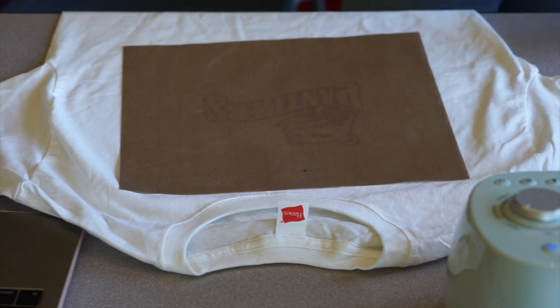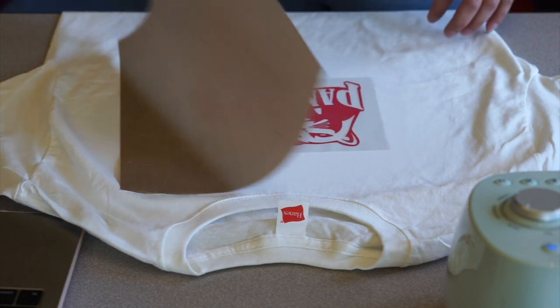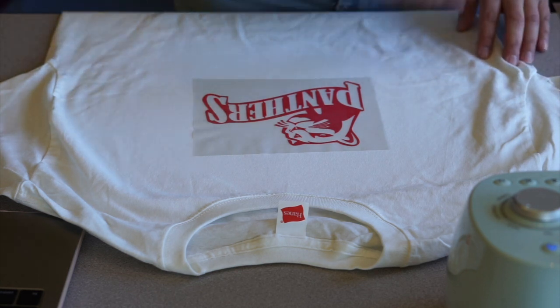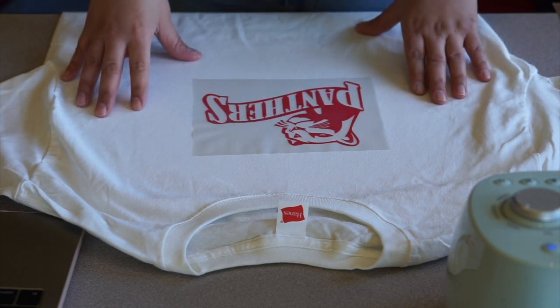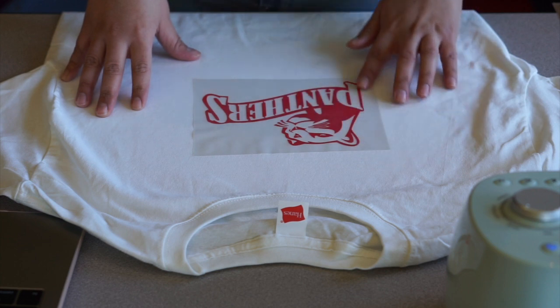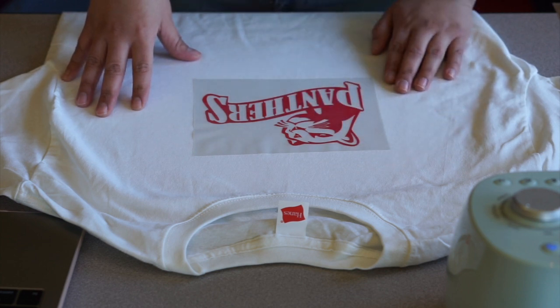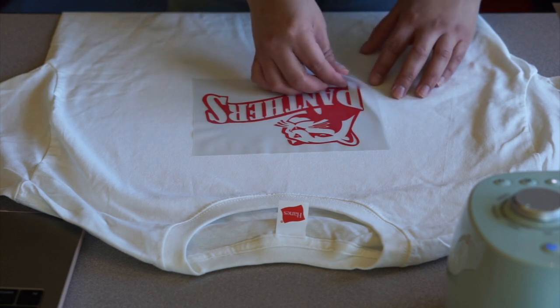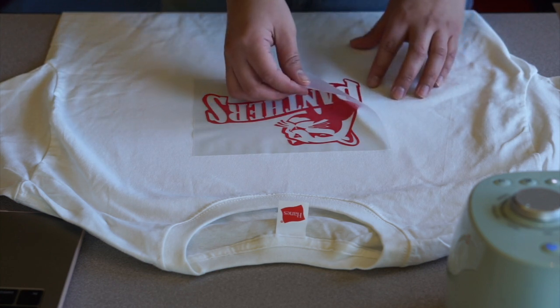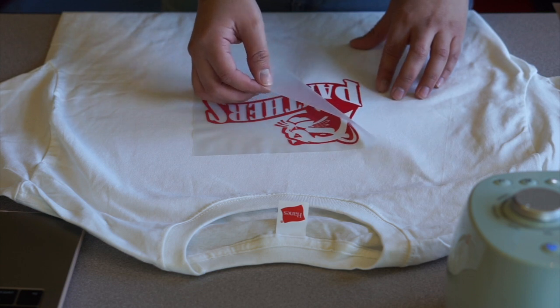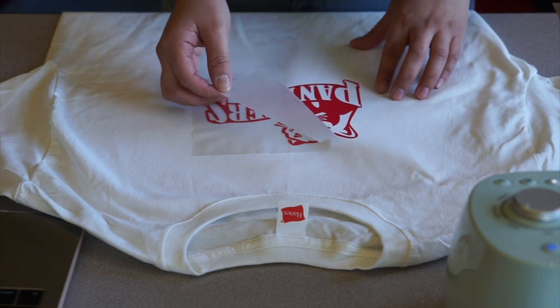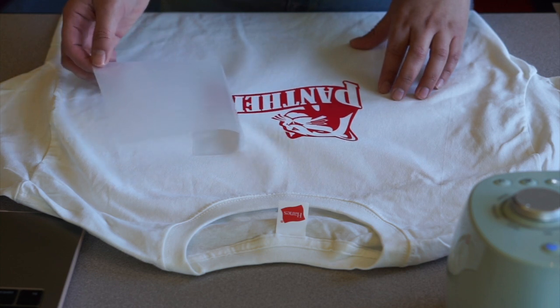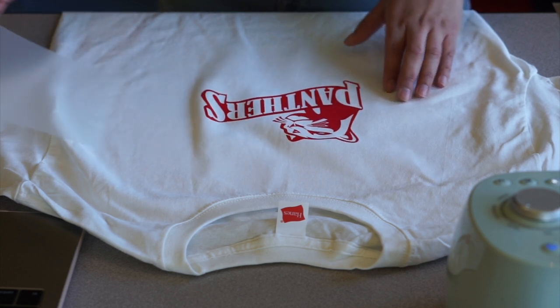Then I remove the Teflon sheet, and you do want to be careful because it might be hot. We want to let it cool down a little bit, and once it's cool to the touch, you can go ahead and pull off the plastic, revealing the finished iron-on design. You want to go slow here because you don't want to pull off any elements of the design from your shirt.